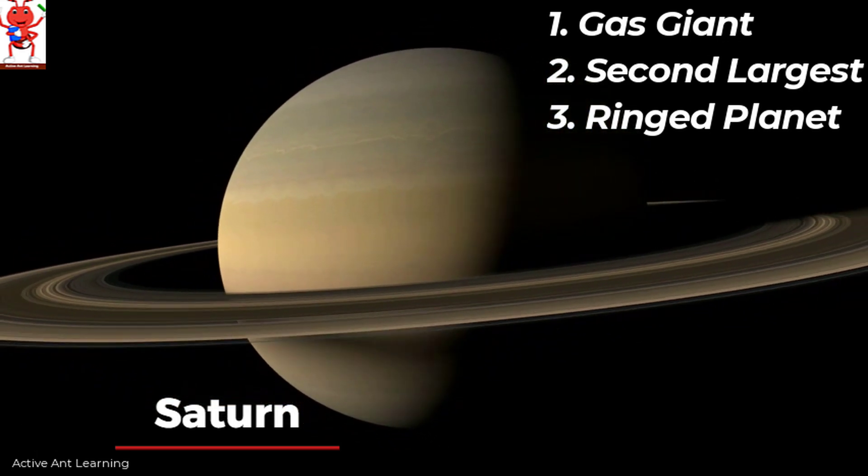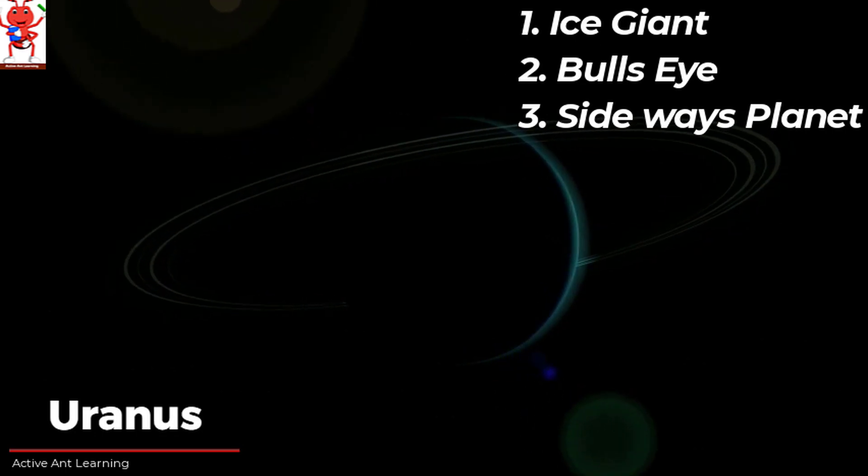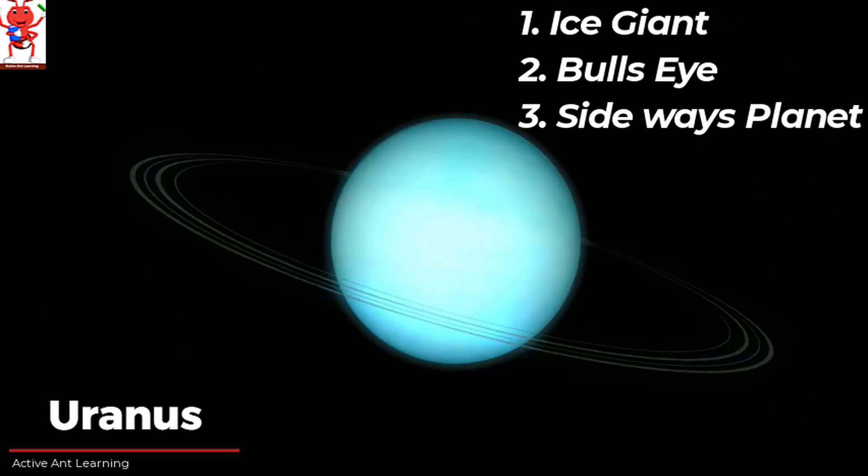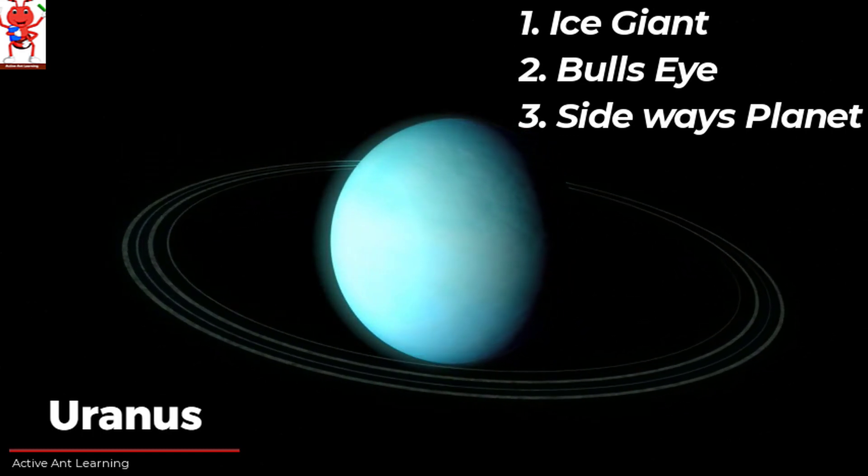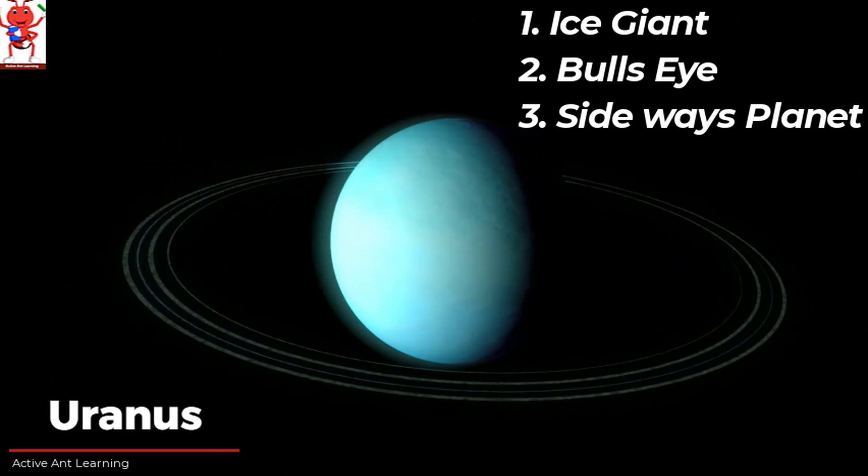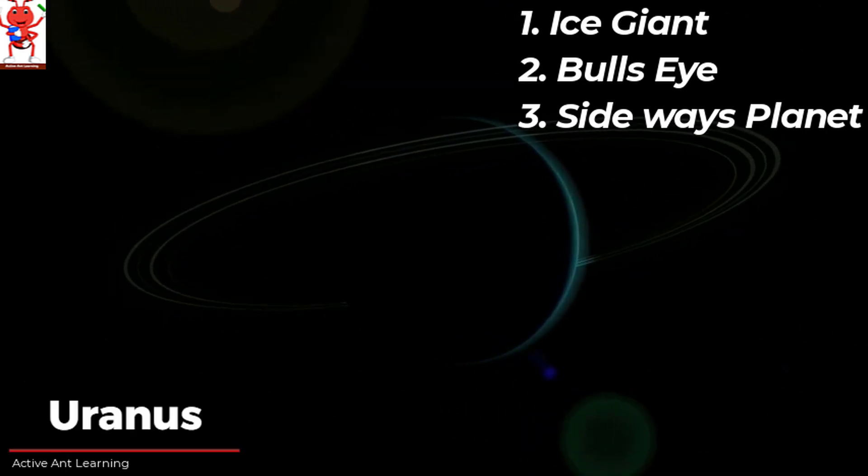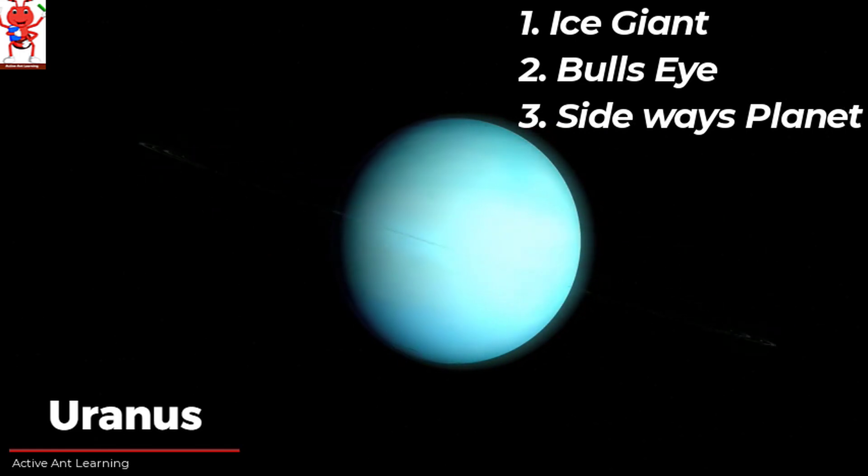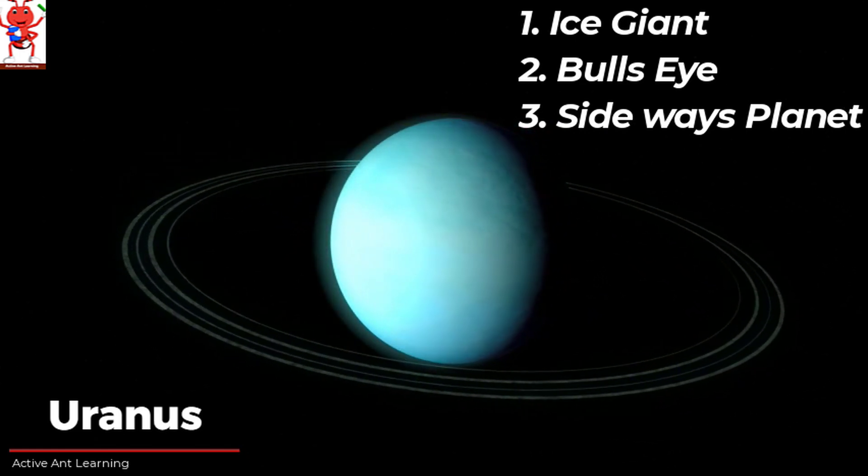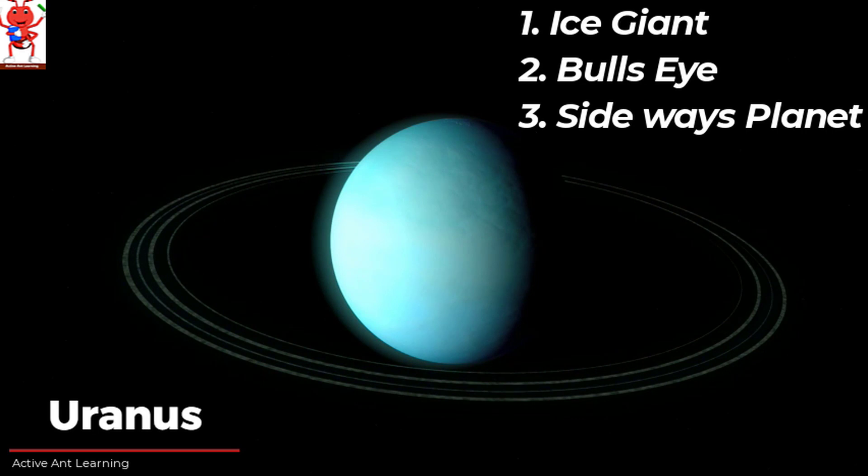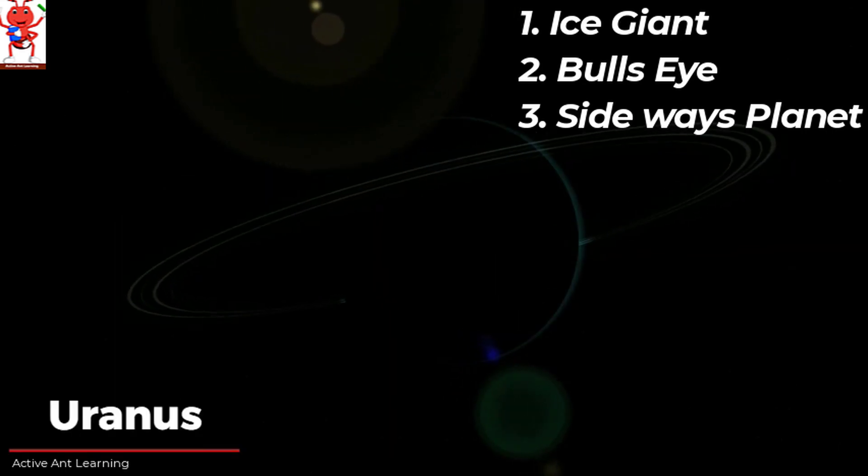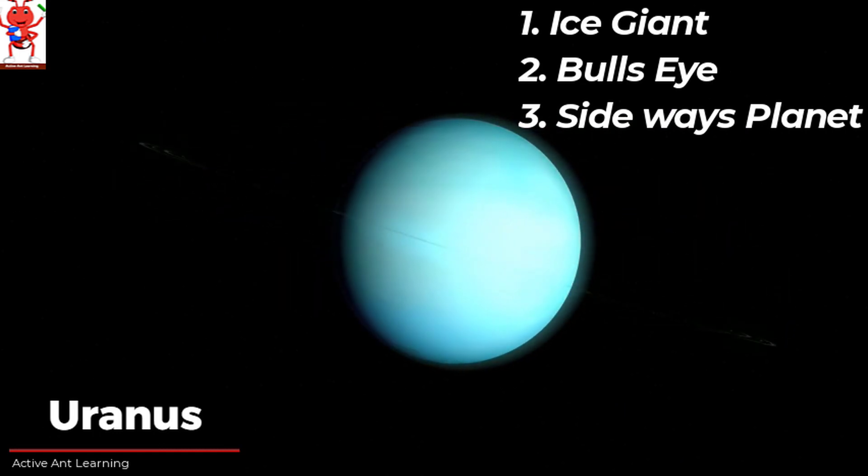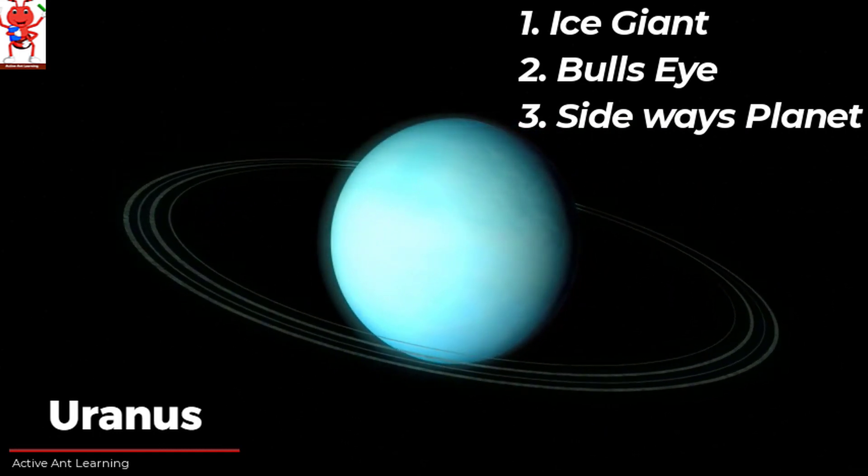Uranus is the seventh planet from the sun. Uranus is an ice giant planet and it was the first planet found using a telescope. Anvi do you know which planet is also called as bull's eye planet? Uranus is also called as bull's eye planet because it rotates on its side and looks like a bull's eye.